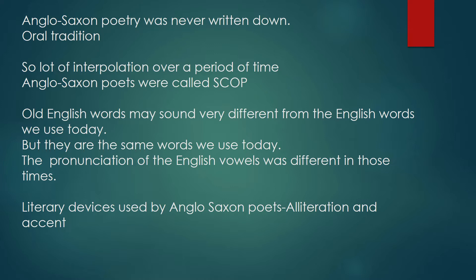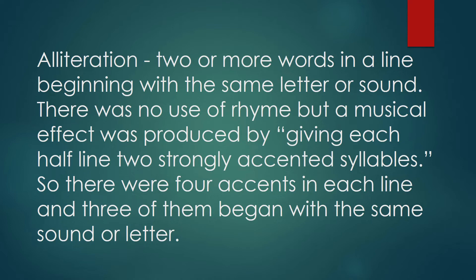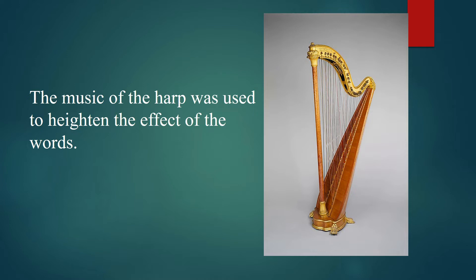The literary devices used in Beowulf and other poems of that period — like Widsith and The Seafarer — were alliteration and accent. When two or more words in a line begin with the same letter or sound, that is alliteration. There was no use of rhyme, but a musical effect was produced by giving each half-line two strongly accented syllables, making four accents per line, three of which began with the same sound. These poems were usually accompanied by the music of the harp.